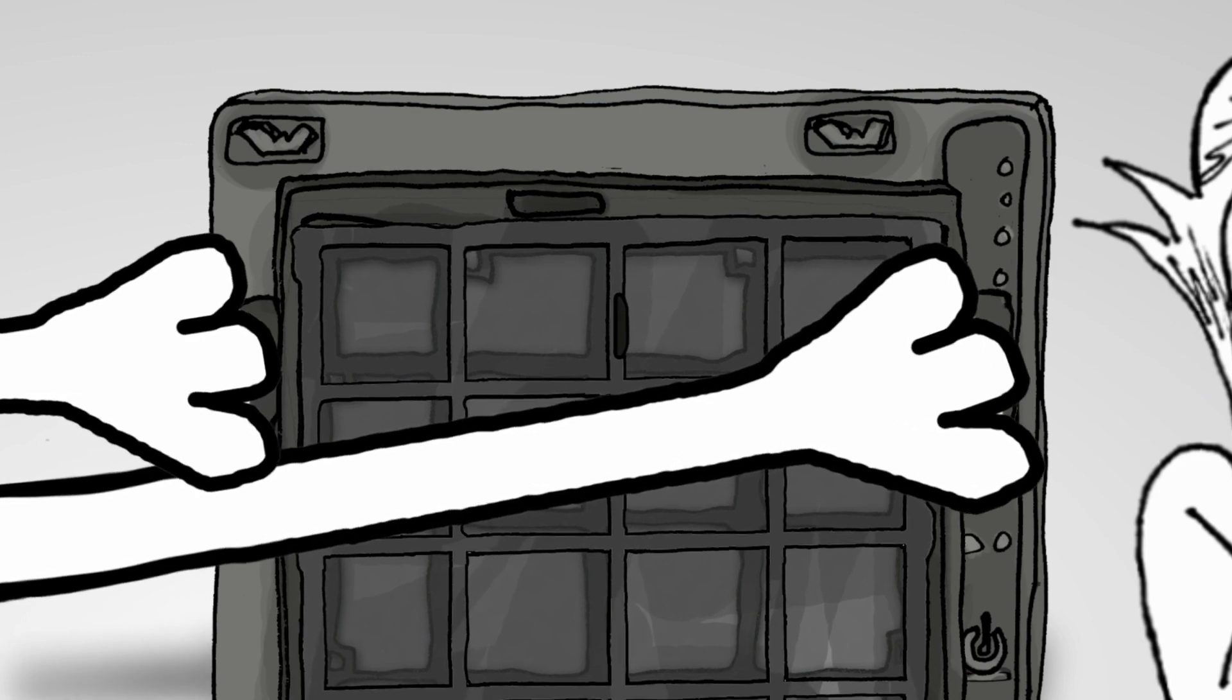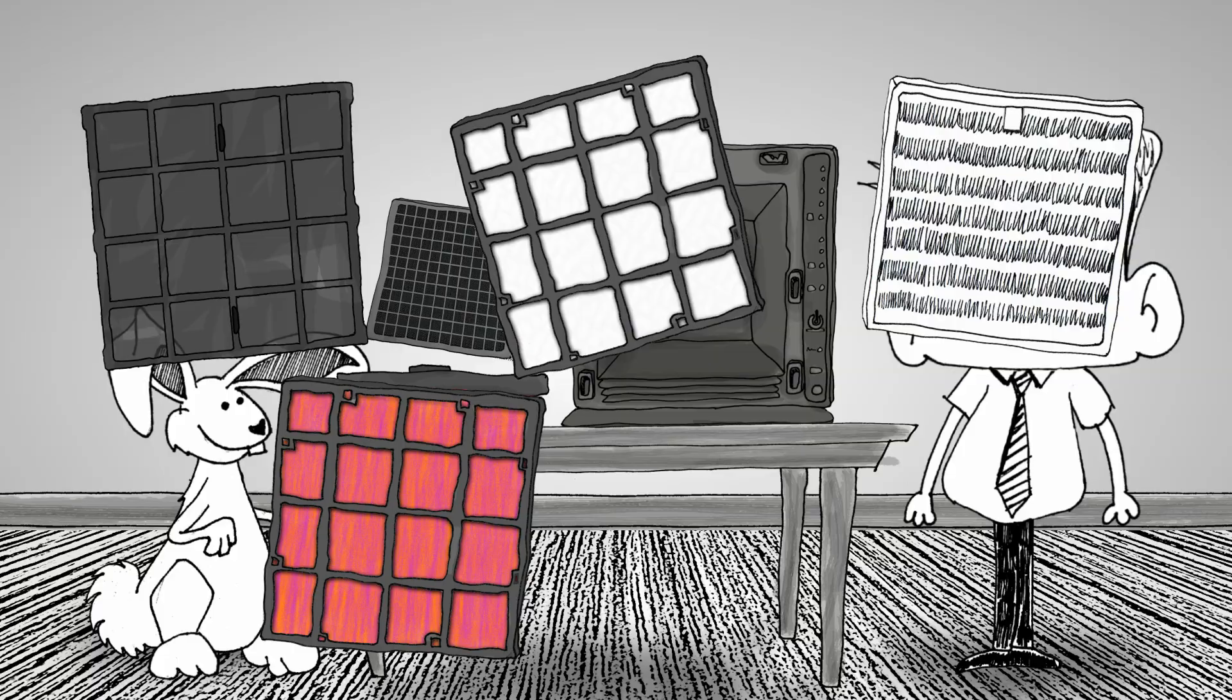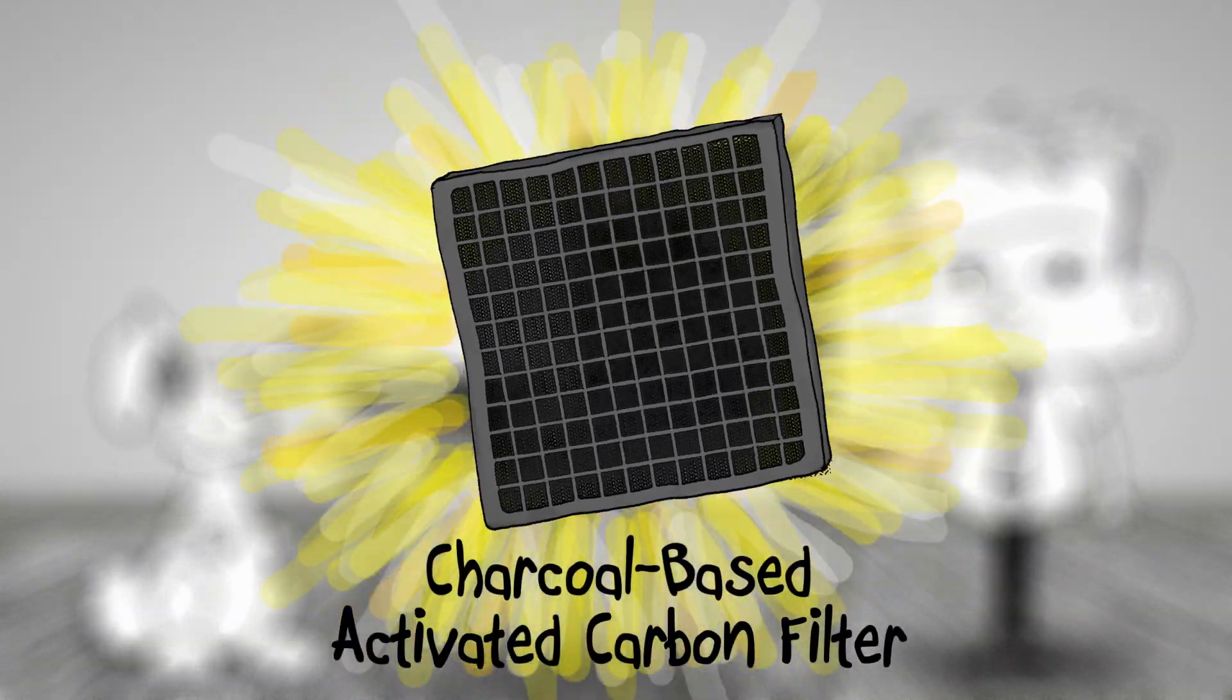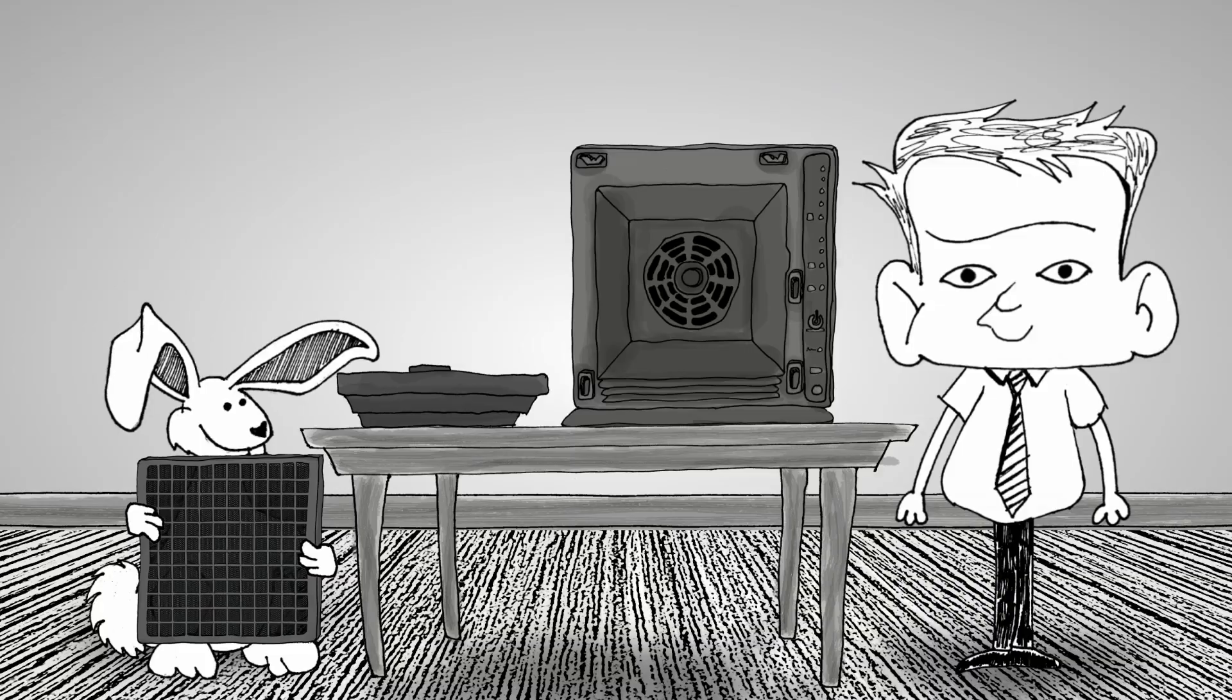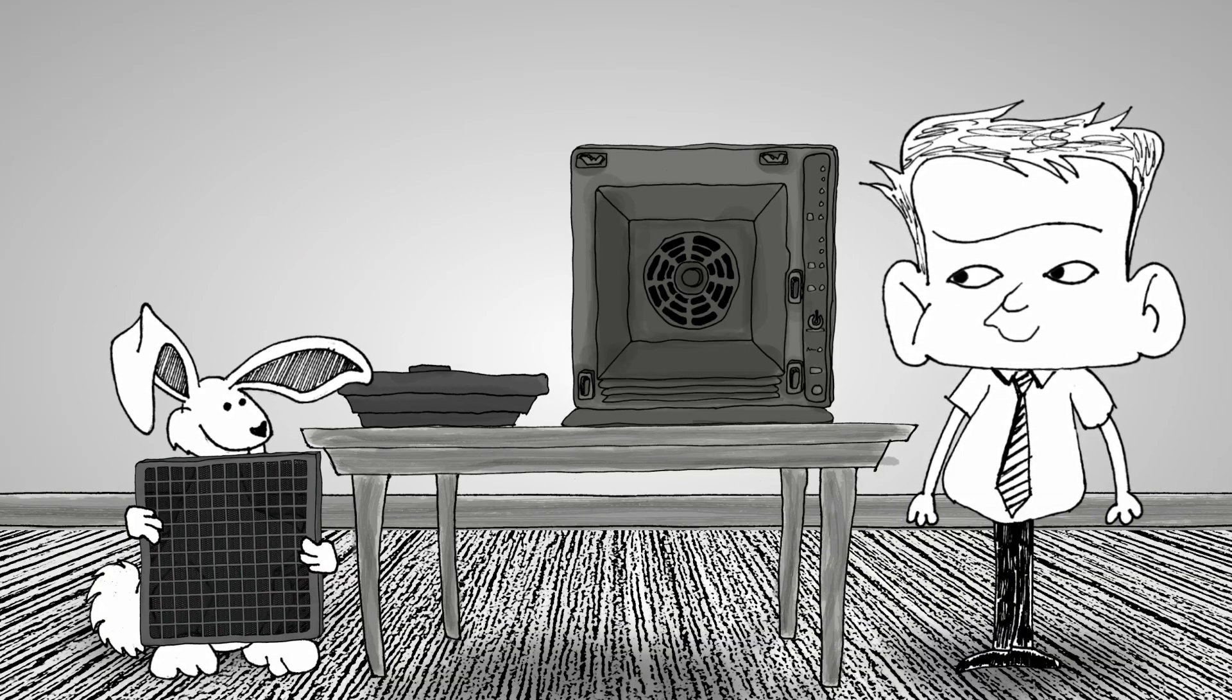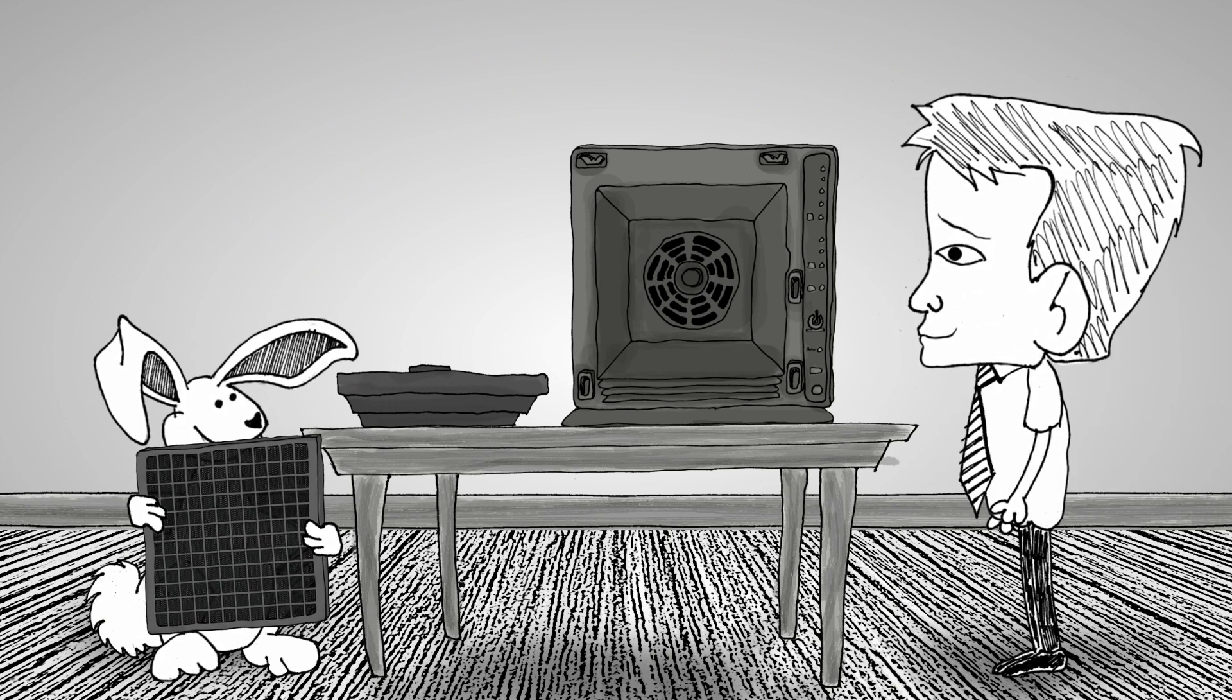Lay the filter case on a flat surface. Once you have removed all five filters, we can begin. The first filter to go in is the charcoal-based activated carbon filter. This is the black filter with tiny pieces of charcoal inside. You can identify this filter by giving it a little shake.